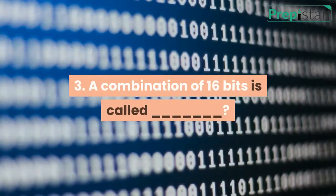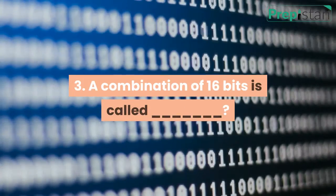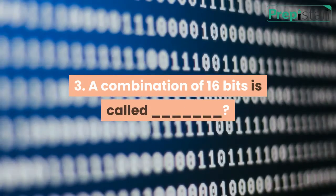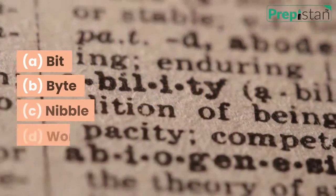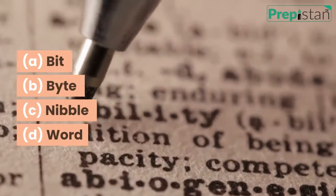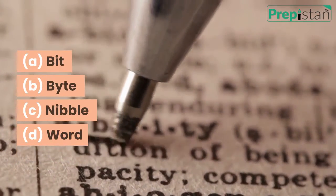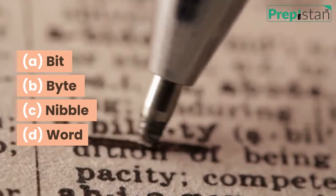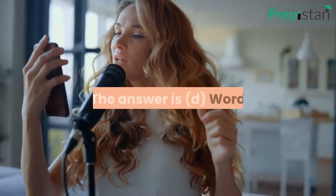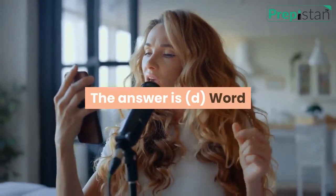3. A combination of 16 bits is called: A. Bit, B. Byte, C. Nibble, D. Word. The answer is D, Word.